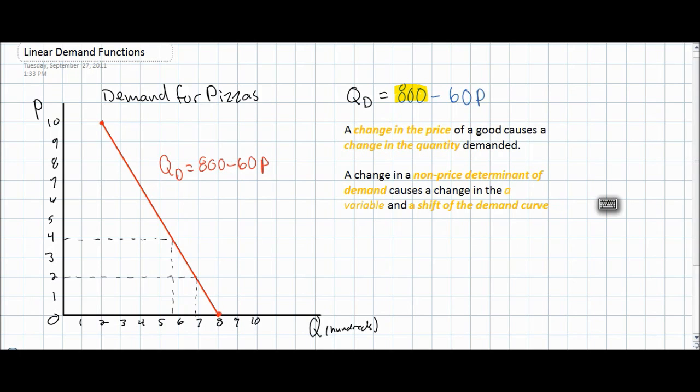Let's assume that pizza and hamburgers are substitute goods for one another, and that the price of hamburgers, which we'll use pH for the abbreviation, decreases. A decrease in the price of hamburgers, as we know, since they are substitutes, should lead to a decrease in the demand for pizzas. How would this look and how would this affect our demand equation for pizzas?